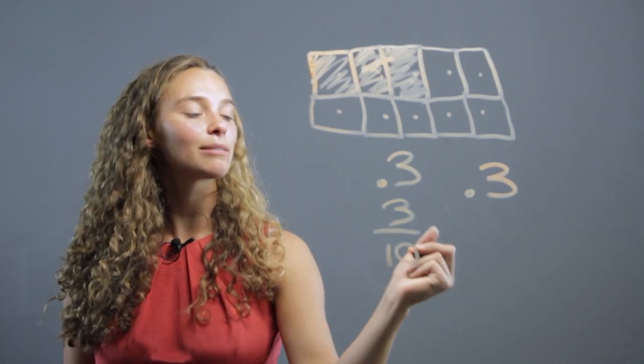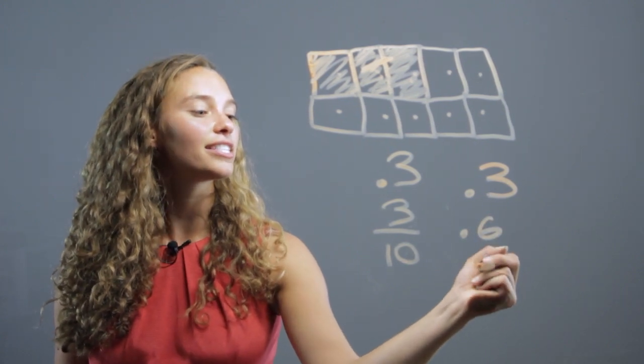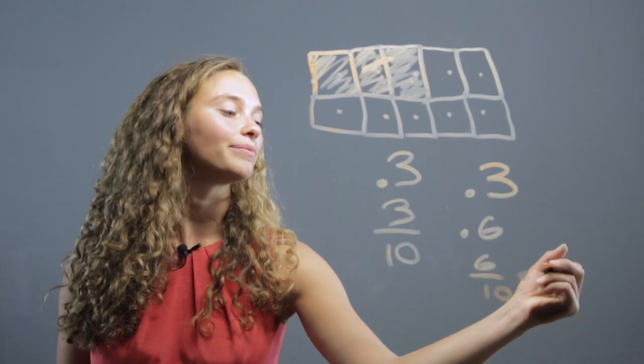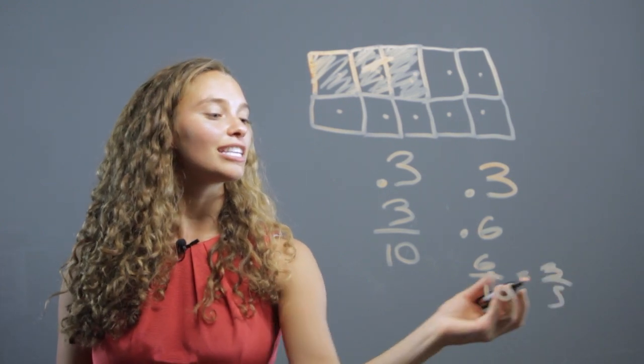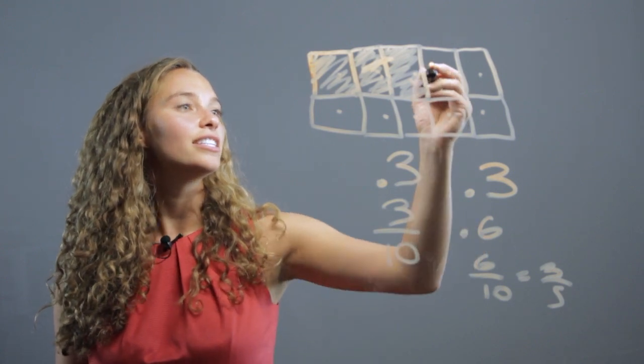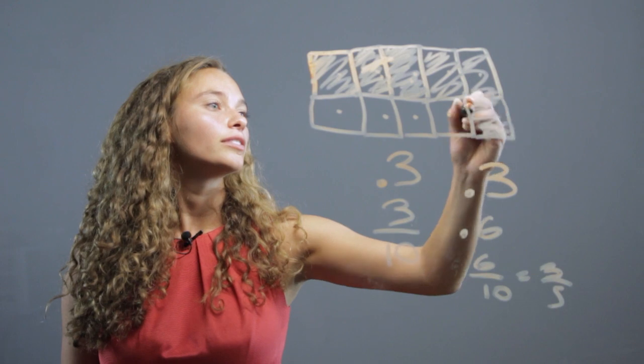If they have the decimal point six, or six tenths—or as we know it, if we reduce that, three fifths. But let's keep looking at it as six tenths, or point six. We're going to shade six, so we'll add three more.